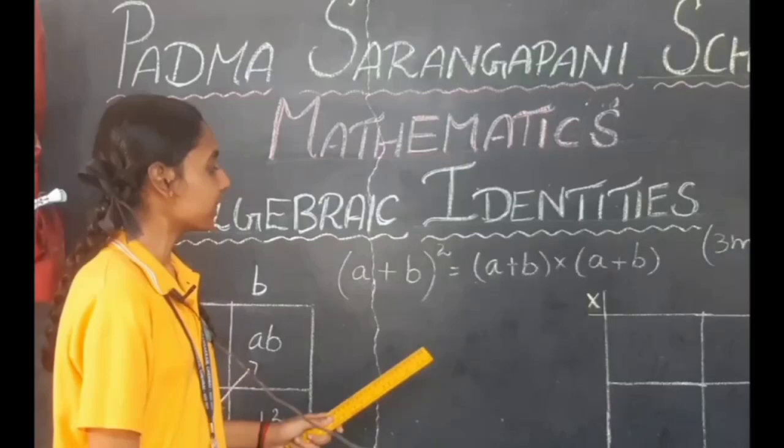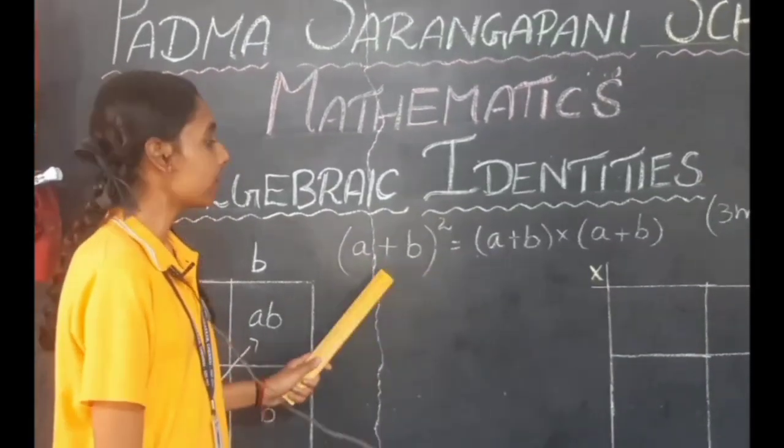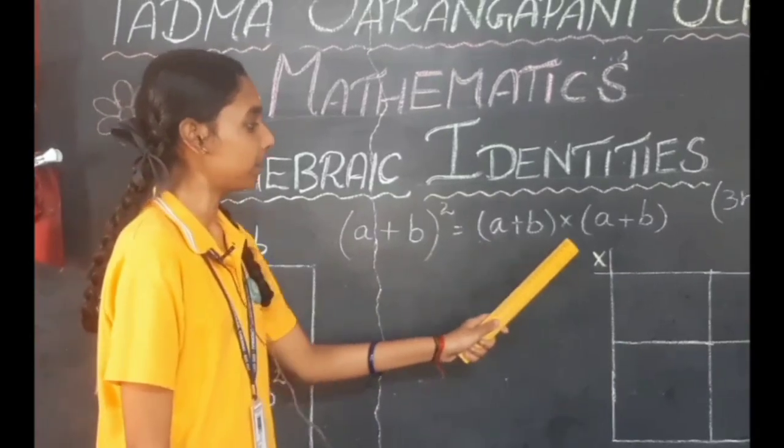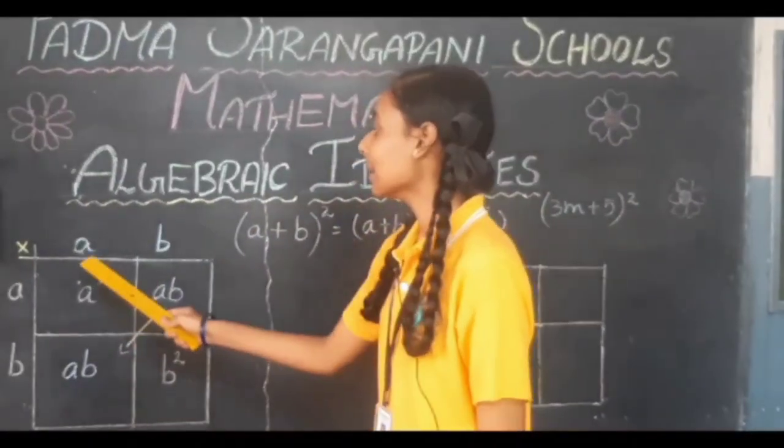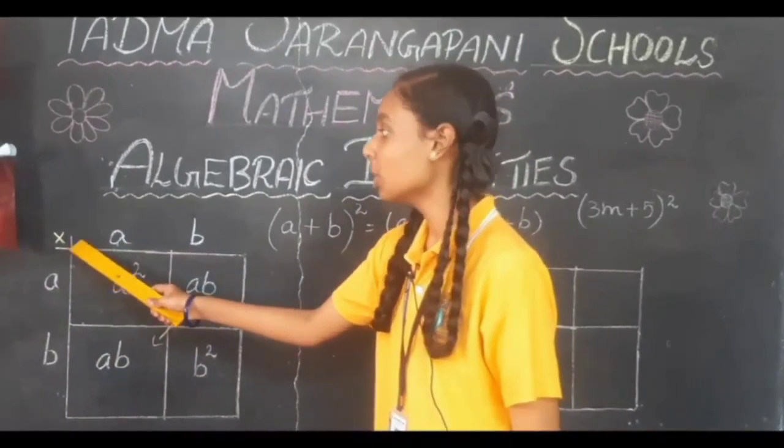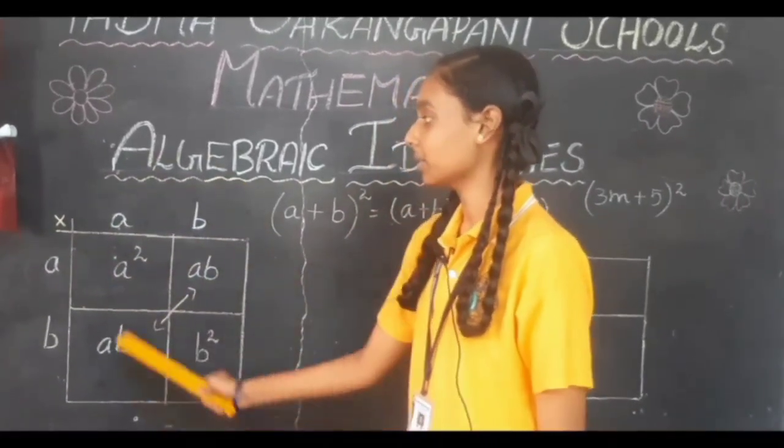Let us start with A plus B the whole square. A plus B the whole square can be expressed as A plus B into A plus B. We have to place the A plus B in the top and side of the box. The binary operation is multiplication, so we have to multiply all the values.